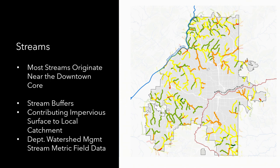We also looked at streams. Most of the streams in the city originate in the center and radiate outward, so even streams at the periphery are picking up significant impact from the dense impervious development downtown. We looked at stream buffers, levels of imperviousness contributing to different streams, and field data collected by the Department of Watershed Management to understand where the healthiest stream habitats are and where restoration needs and priorities exist.